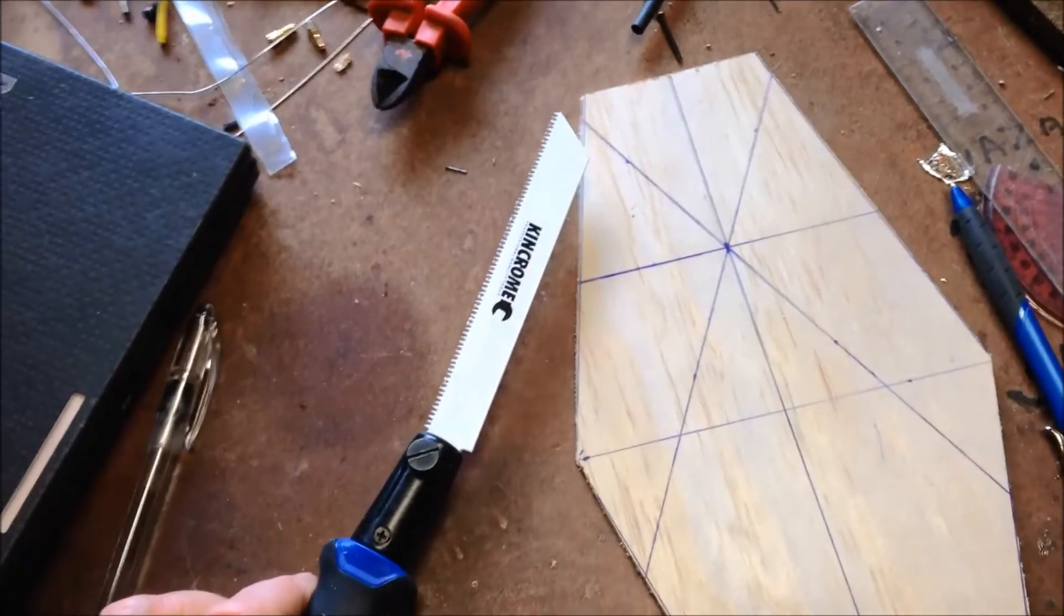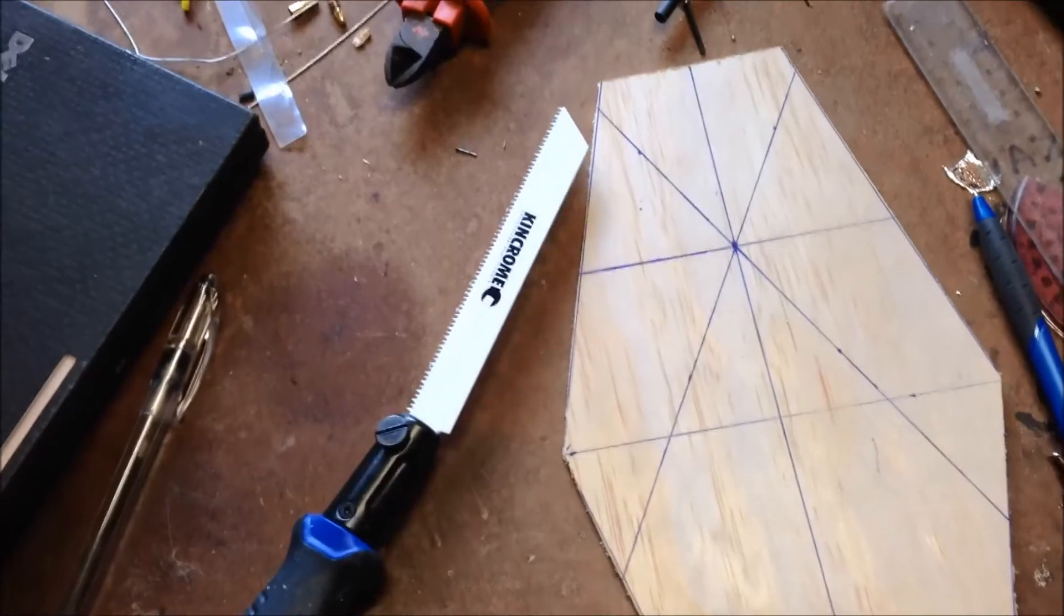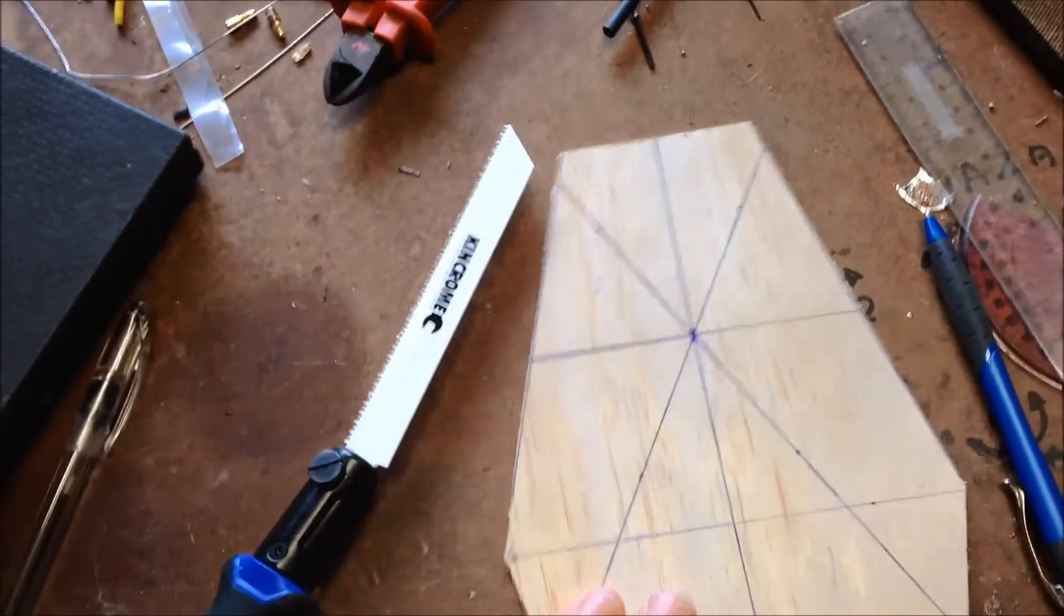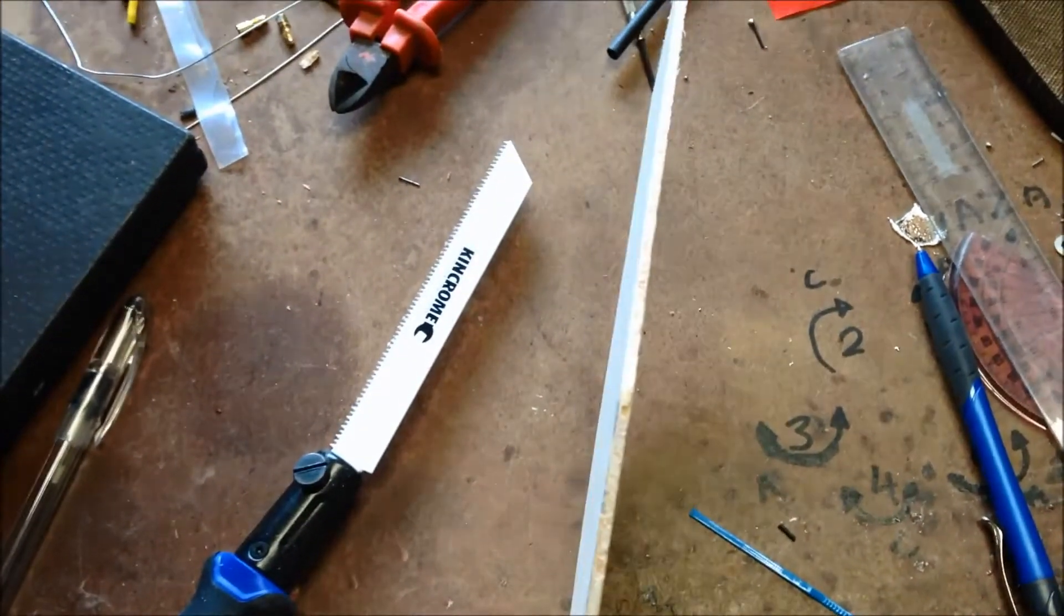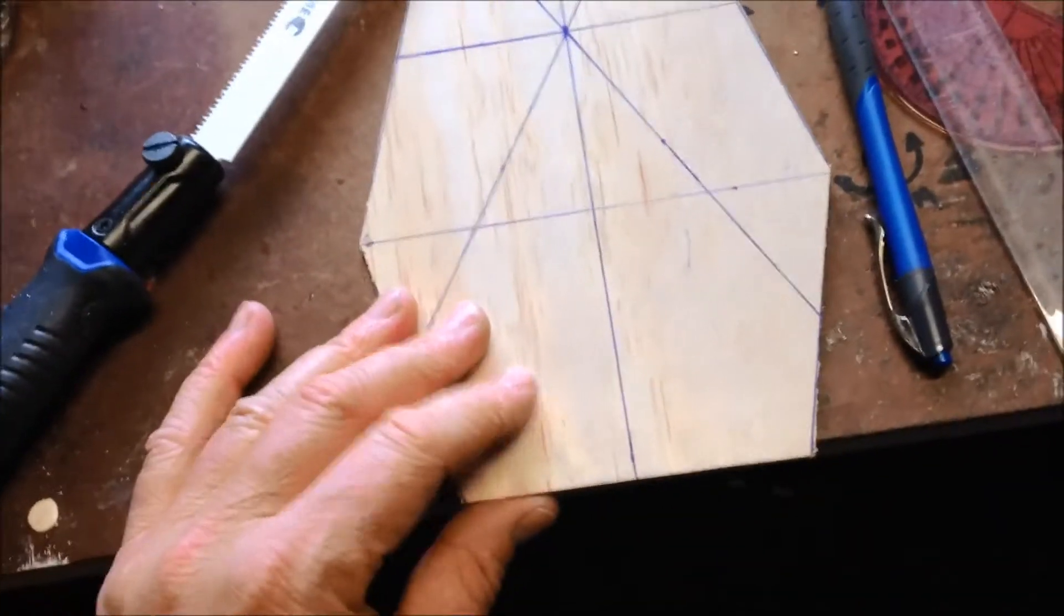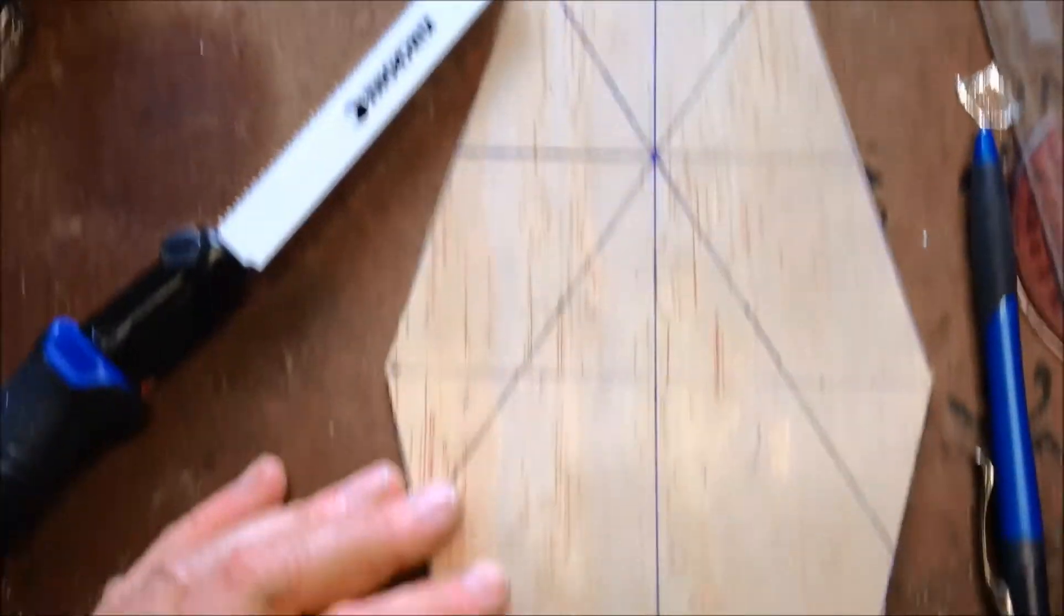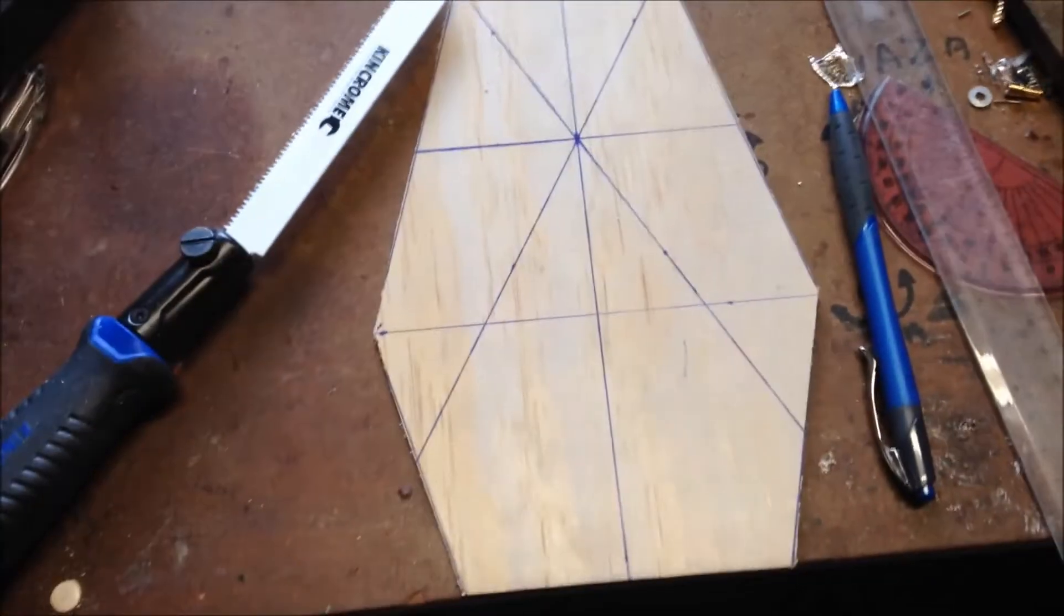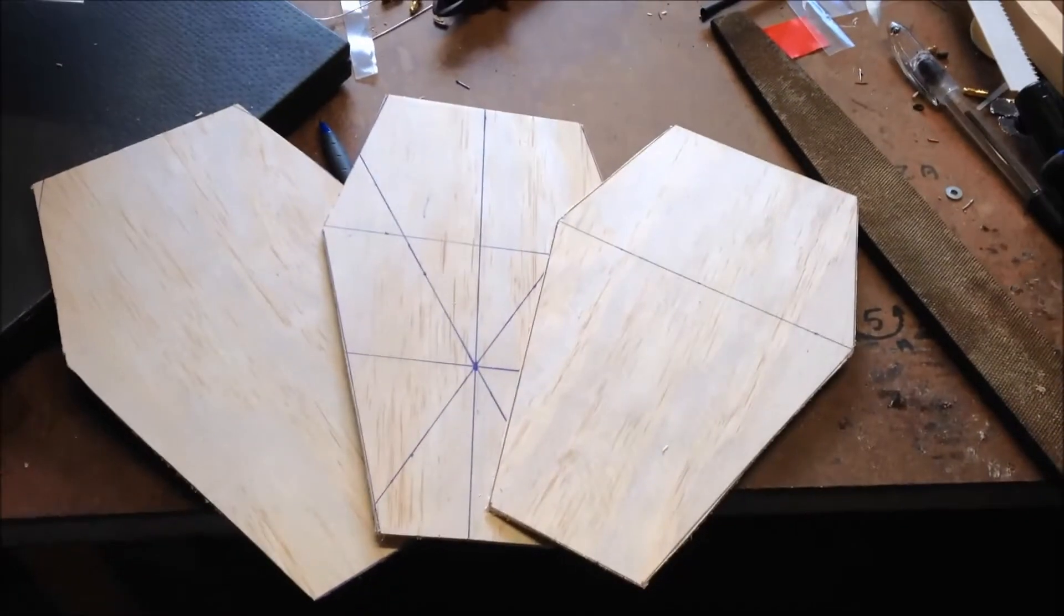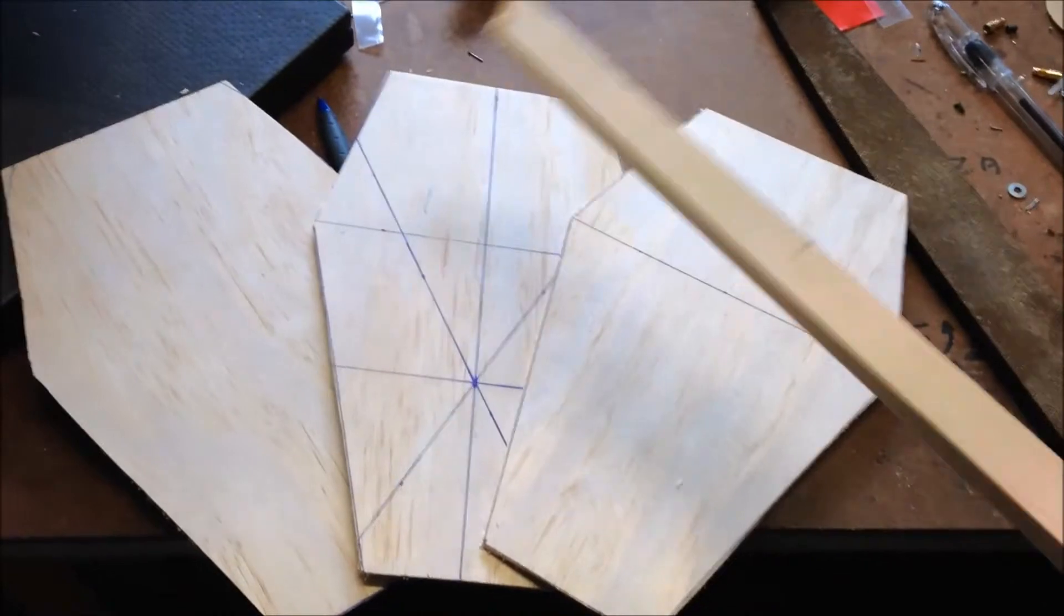I went out and bought myself this little saw because before I was using a full-on hand saw and it was making a bit of a mess, but this is much nicer. That's my three plates made and I'm using this 18mm dressed quad to do the arms, same as this one.